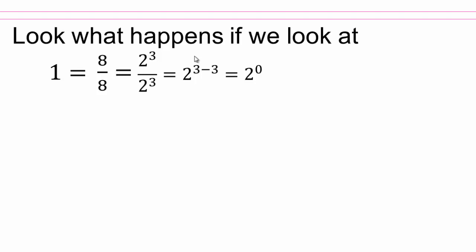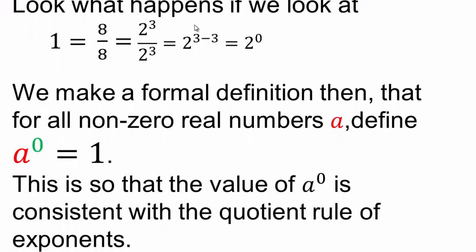So 2 to the 0 must equal 1. You don't really have a choice. We make a formal definition: for all non-zero real numbers a, we define a to the 0 as equaling 1. When you have a base raised to an exponent of 0, you get 1. This is because of the quotient of exponents — to make it consistent, 2 to the power of 0 has to equal 1. Many people know the rule but don't know why; if you remember why, you'll have an easier time remembering it.